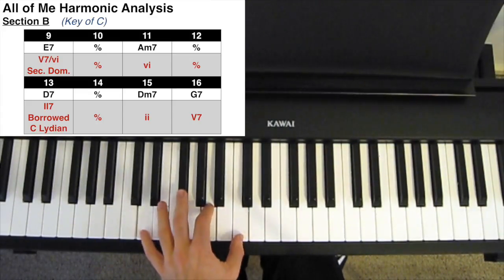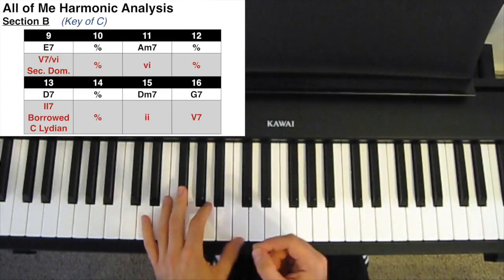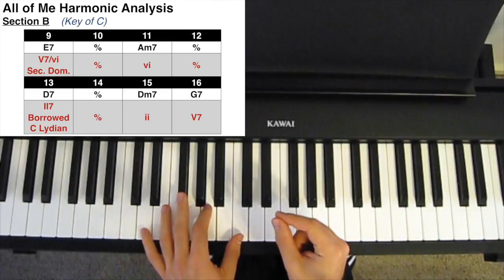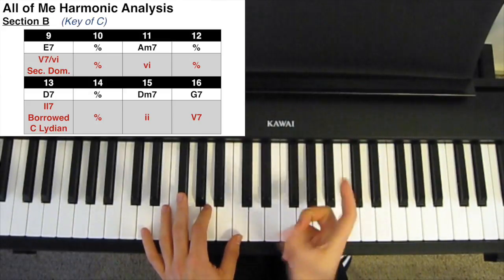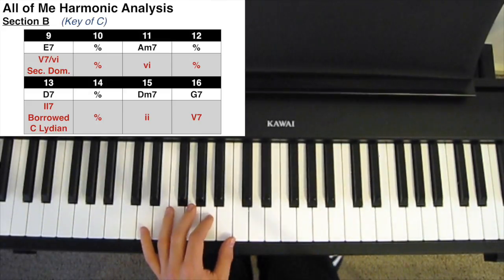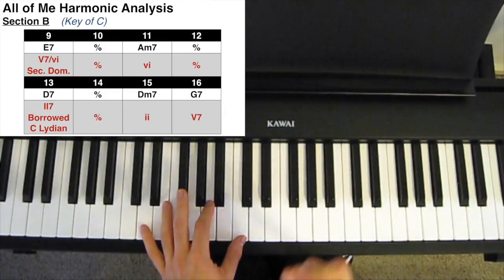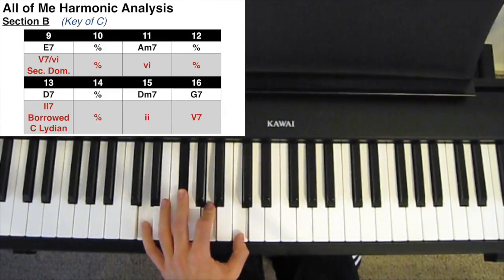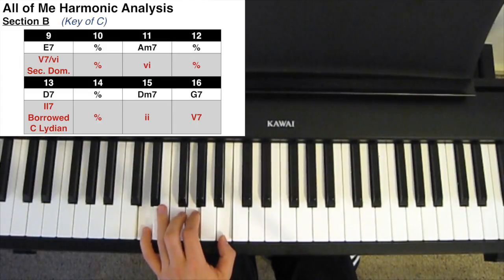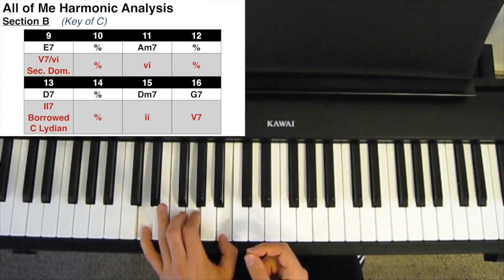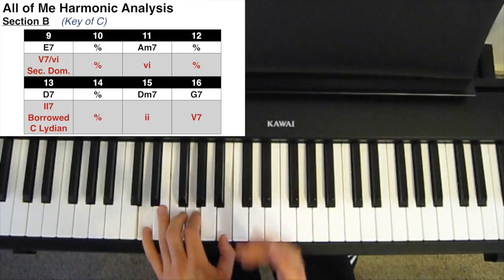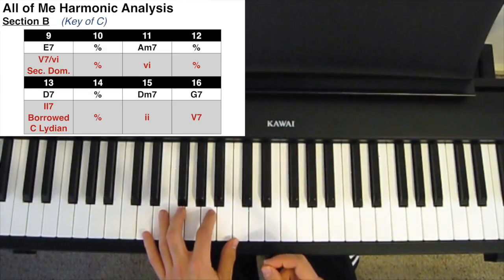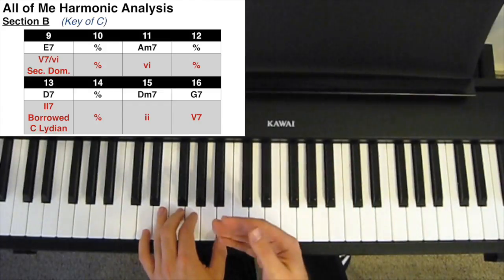We have a D7 for 2 bars, and you can analyze this as either a borrowed 2 dominant chord from the Lydian mode, so a bit of modal interchange, or a 5 of 5 secondary dominant, with the D7 going to a G7. But before we get to the G7, we do a quick little 2-5. We insert the 2 as a kind of passing note, before we get to the 7.